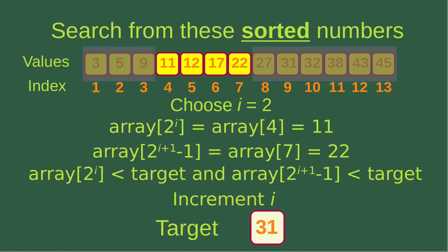Now we choose i equals 2. 2 to the power of i becomes 4, so the fourth element in the array is equal to 11, while the seventh element of the array is equal to 22. We also see that both numbers, 11 and 22, are smaller than our target which is 31, so this particular interval isn't able to contain our target.